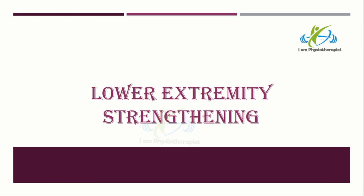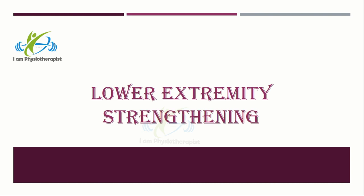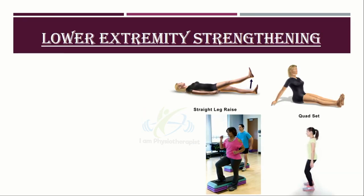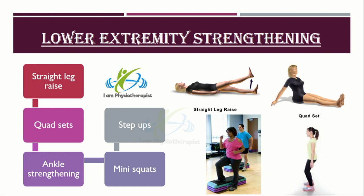Strengthening exercises may be incorporated into the gait training exercise program. If there is weakness in hip, knee, or ankle muscles, this may prevent the ability of walking safely. Exercises should be done slowly, and it is recommended to use light resistance and high repetitions for lower extremity gait training exercises. Exercises for lower extremity strengthening may include straight leg raises, quad sets and short arc quads, ankle strengthening with resistance bands, mini squats, and step-up exercises.